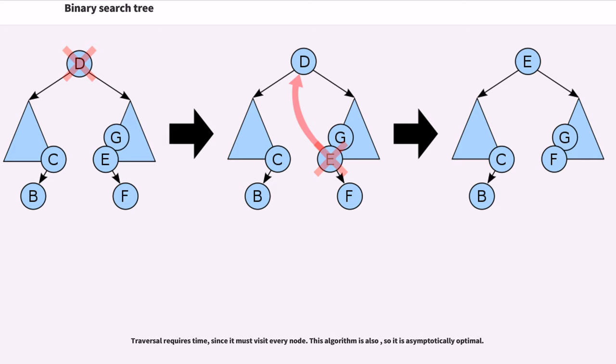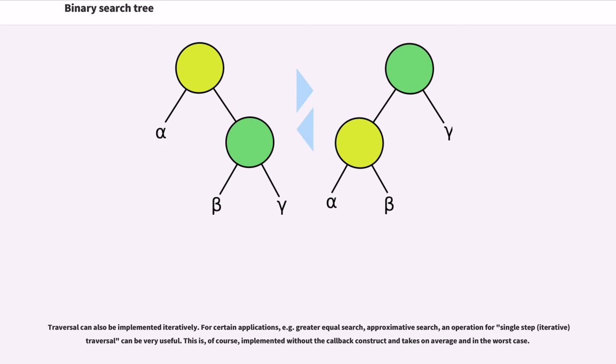Traversal requires time, since it must visit every node. This algorithm is also, so it is asymptotically optimal. Traversal can also be implemented iteratively. For certain applications, for example greater equal search, approximative search, and operation for single step, iterative traversal can be very useful. This is, of course, implemented without the callback constructing takes on average and in the worst case.